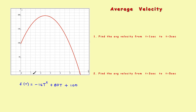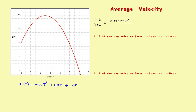To give this some units, let's suppose we have time across the bottom in seconds, and this will be the object's position in feet. So height is feet, time is seconds. If you look in a physics book for the definition of average velocity, you should find that the average velocity is equal to the change in position divided by change in time. That's the formal definition of average velocity.